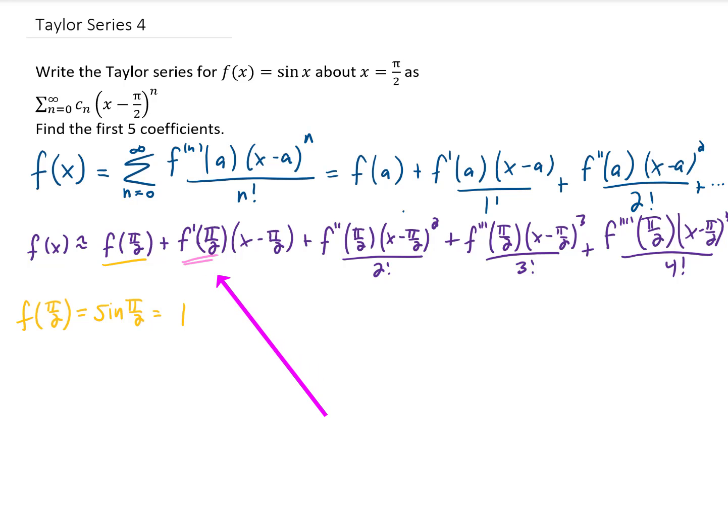Next, we need to find f prime of pi over 2, which first requires we take a derivative of the given function. The derivative of sine is cosine, and then we can find f prime of pi over 2 by plugging x equals pi over 2 into that. Cosine of pi over 2 is 0, so our second coefficient is going to be 0.